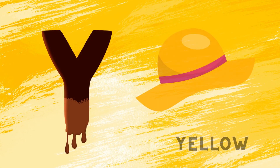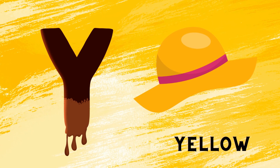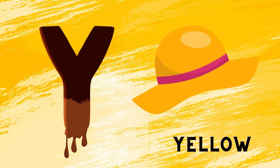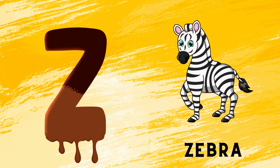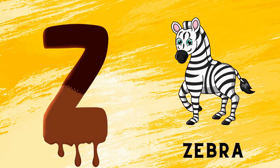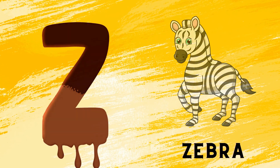Y is for yellow, ye-ye-yellow. Z is for zebra, z-z-zebra.